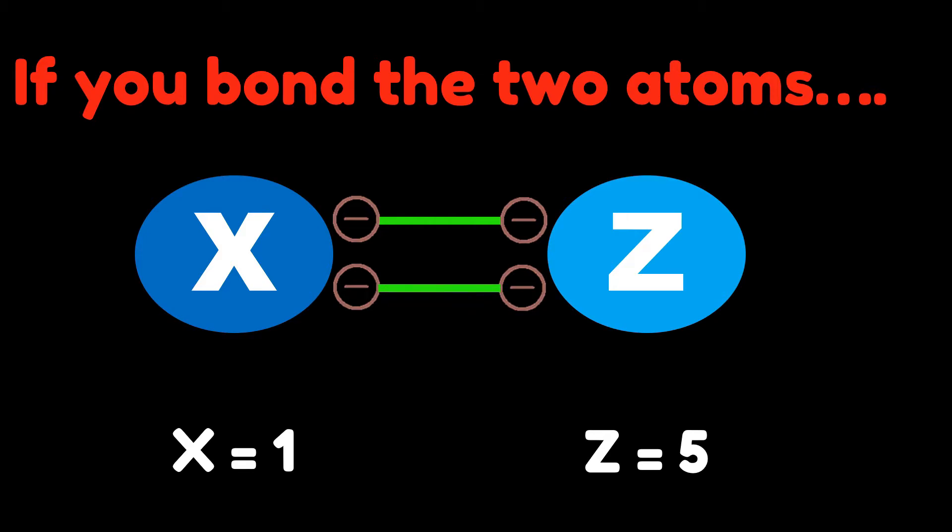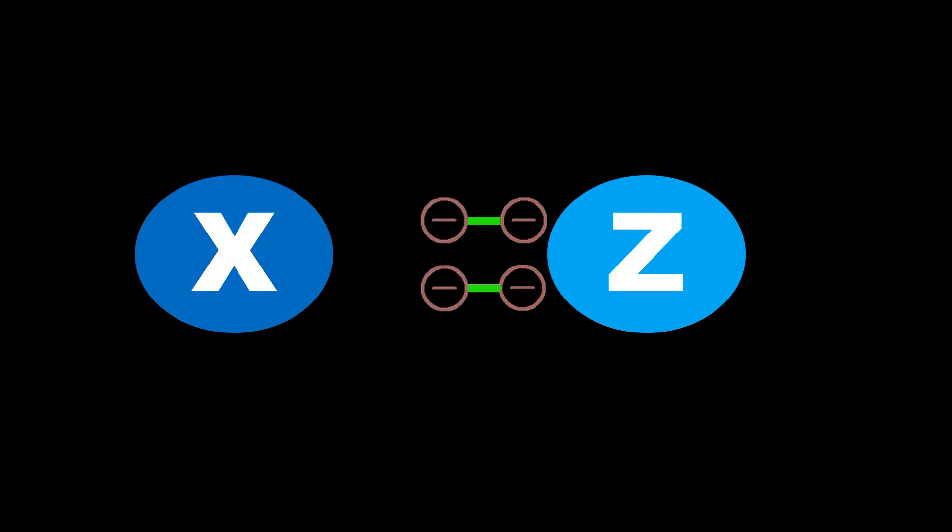The electrons are more attracted to the Z-atom, so they are shifted more towards the Z-atom. By doing so, this grants them partial charges. The excess of negative charges grants Z-atom a partial negative charge and the X-atom vice versa.